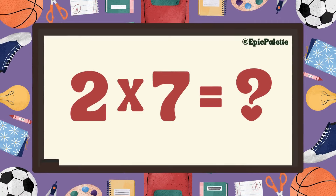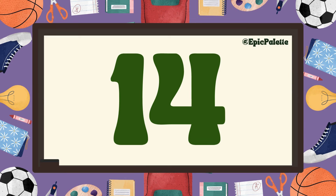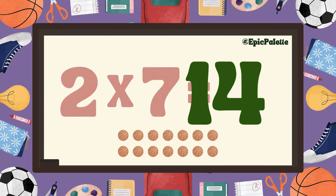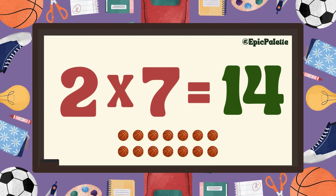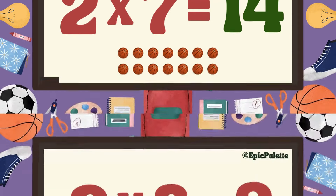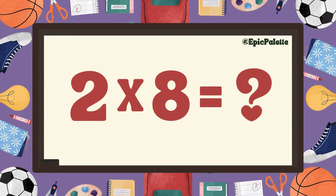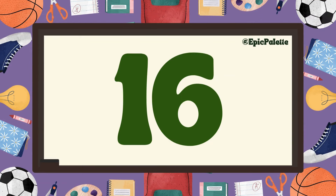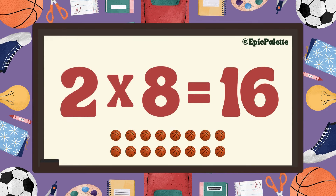You got it! 2 times 7 equals... 14! That's right! 2 times 7 equals 14. Fantastic! You're doing great! 2 times 8 equals... That's right! 2 times 8 equals 16.